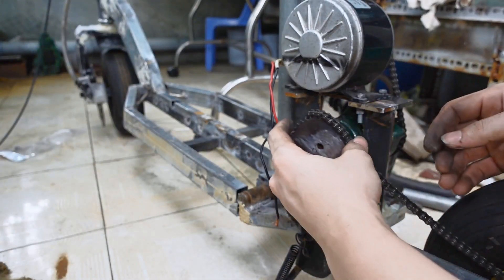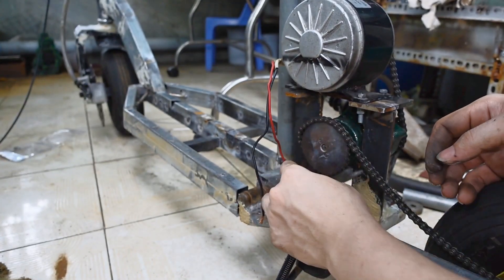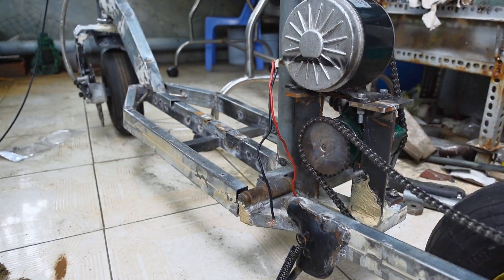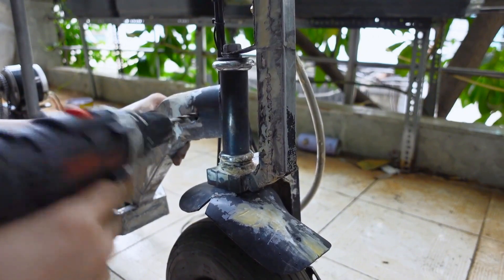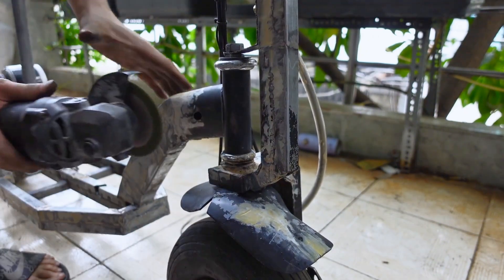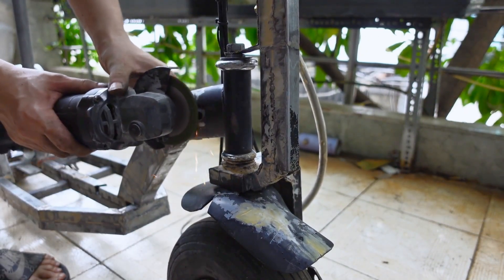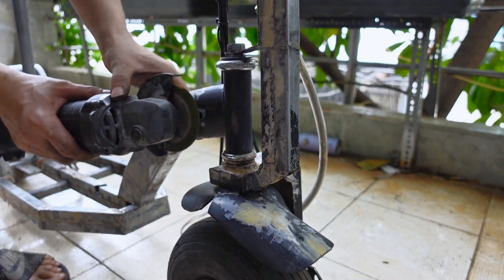Key modifications: filing down teeth on mismatched sprockets to ensure proper chain engagement, welding sprockets to hubs when direct mounting wasn't possible, and using spacers cut from pipes to align the chain correctly.